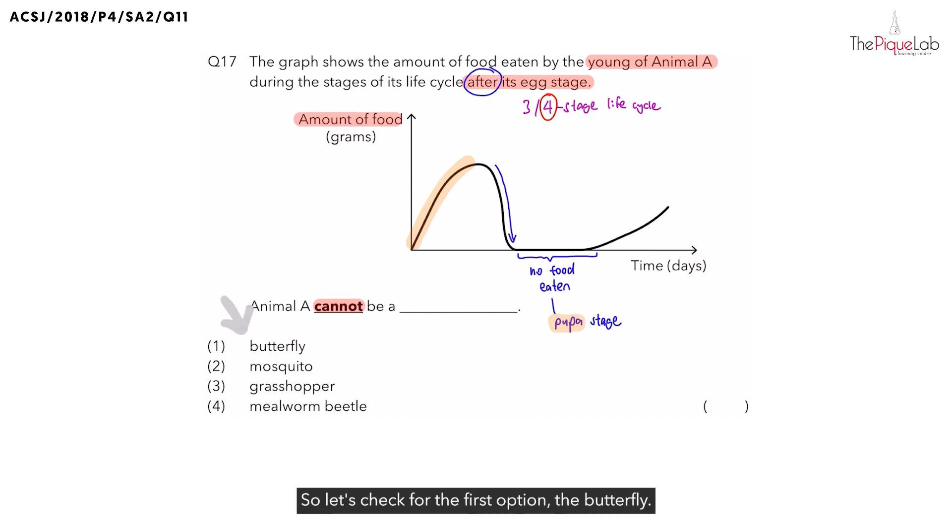For the first option, the butterfly, does it have a three or four-stage life cycle? Butterflies have a four-stage life cycle. So we can cross option one out. What about the mosquito? Mosquito also has a four-stage life cycle. So we can cross the mosquito out.